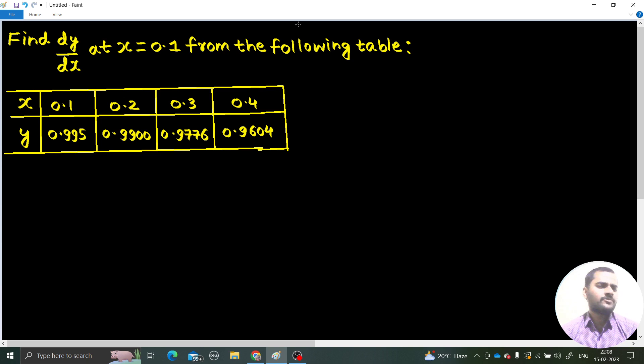In junior classes you must have studied how to calculate the derivative using the rules, just like the derivative of x square is 2x, but here the situation is different. Here you have not been given the polynomial or the function. The set of values of x are given, the set of values of y corresponding to that is given - when you put 0.1 you will get 0.995. Without finding the function, we need to find the derivative at 0.1.